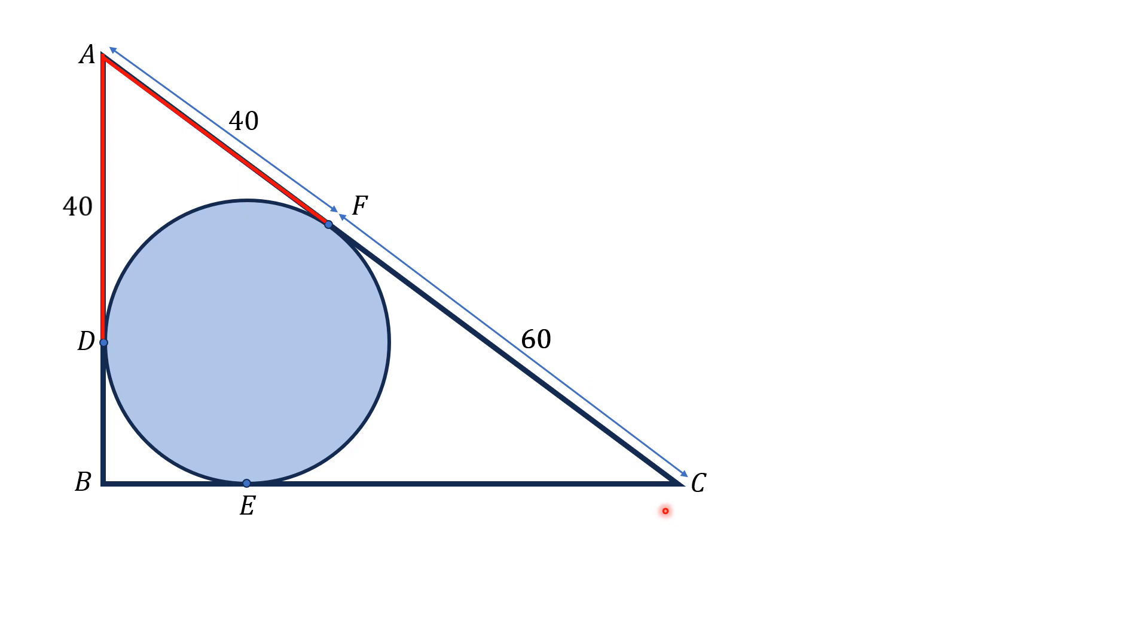In the same manner, if we draw two tangents from point C, which are CF and CE, then CE will be equal to CF. As CF is 60 units, therefore CE will also be 60 units.